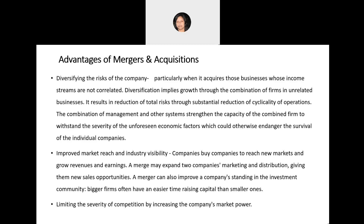M&A also helps to diversify risk. When a company acquires businesses whose revenue streams are not correlated, this is growth through combination of firms in unrelated businesses, resulting in reduction of total risk. The cyclicality of operations can be managed — unforeseen economic factors endangering survival in one market can be offset by growth or profitability arising from operations in other parts of the world experiencing different aspects of the economic cycle.